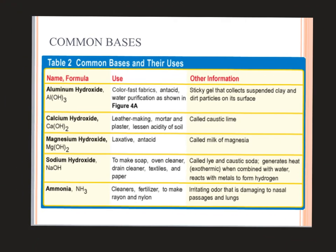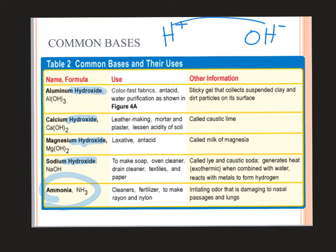Here are some common bases. Just remember: if you see hydroxide in the name, it's a base. The only one that doesn't have hydroxide in the name that you need to know is ammonia — ammonia is going to be basic. These all tend to be cleaners of some sort. Aluminum hydroxide is used in color-fast fabrics, as an antacid, and in water purification — it helps purify water by bonding to acidic things since they have opposite charges. Things that are acidic have H+, things that are basic have OH-. When you put these together, they neutralize and create water and salts, but also a lot of heat.